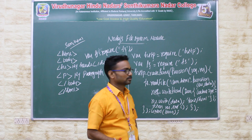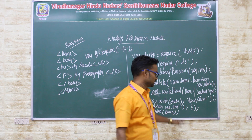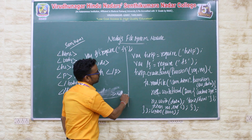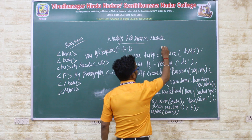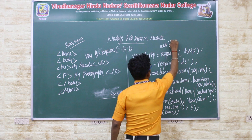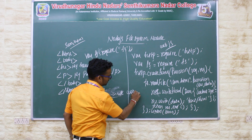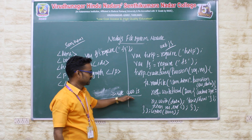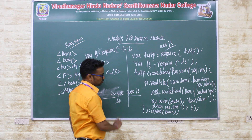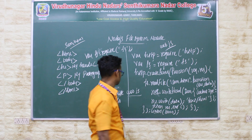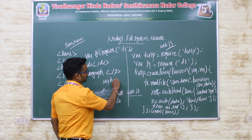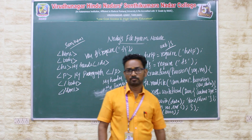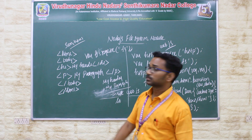To run this program, initiate the server by typing: node web.js in the console. When you run this program, the server is initiated and runs on localhost port 8000. The output displayed in the browser will be 'My Header' and 'My Paragraph'. This is the Node.js file system module example.